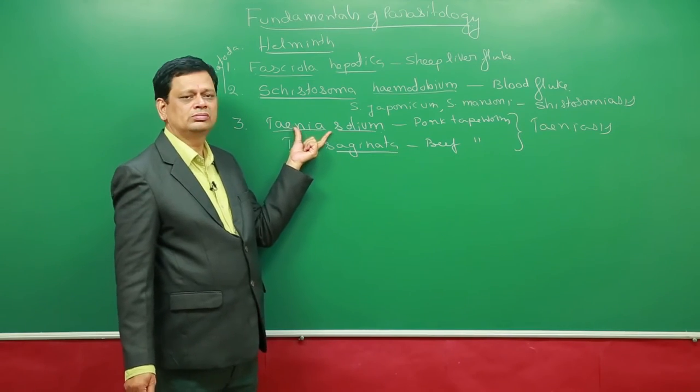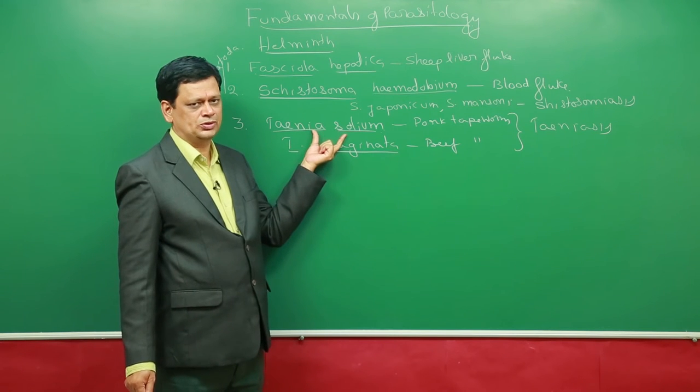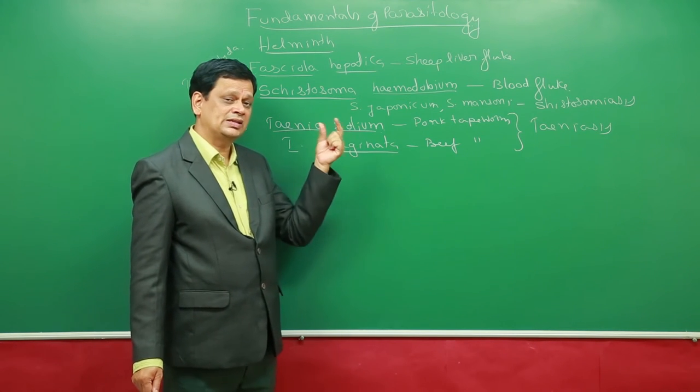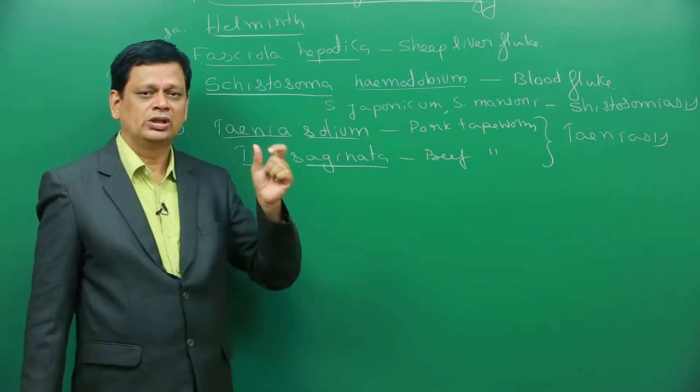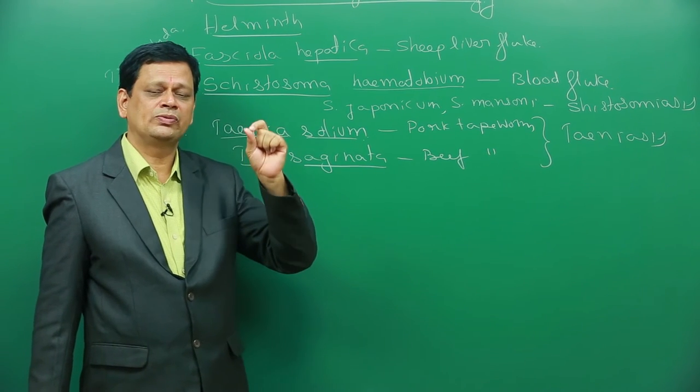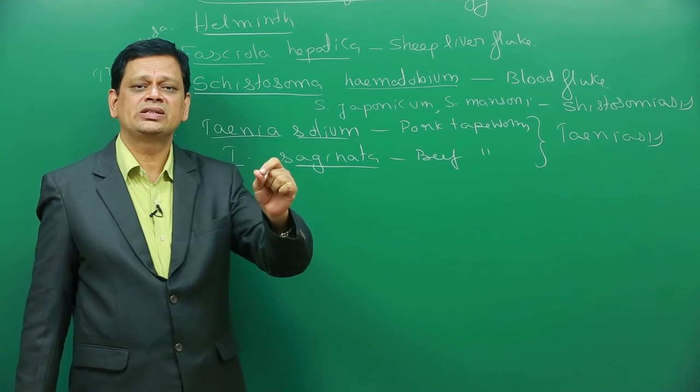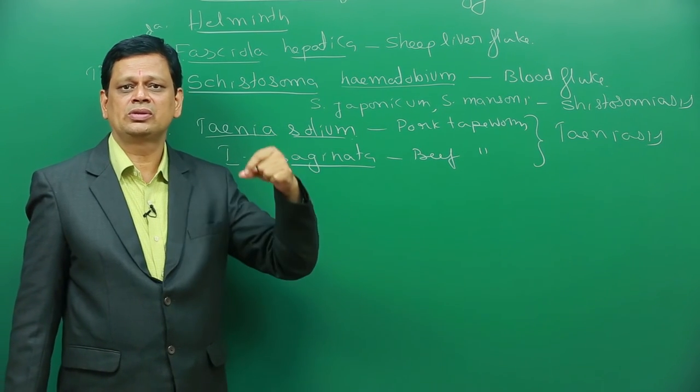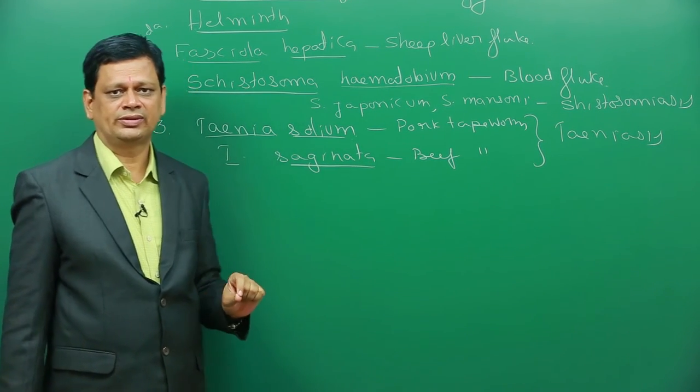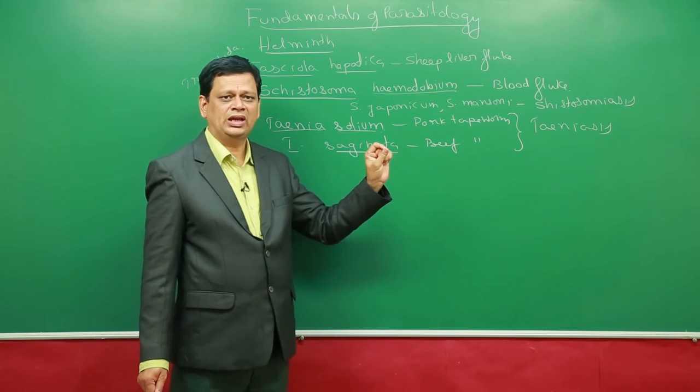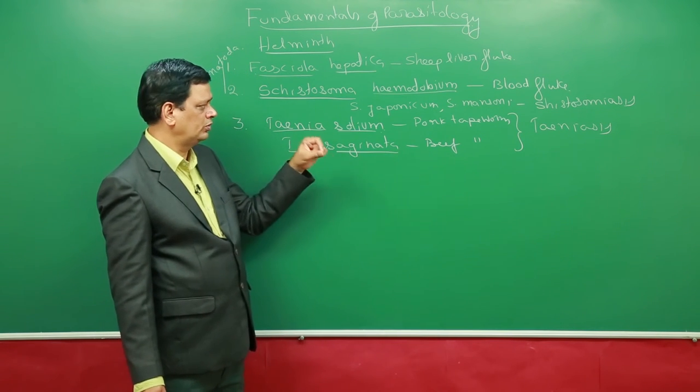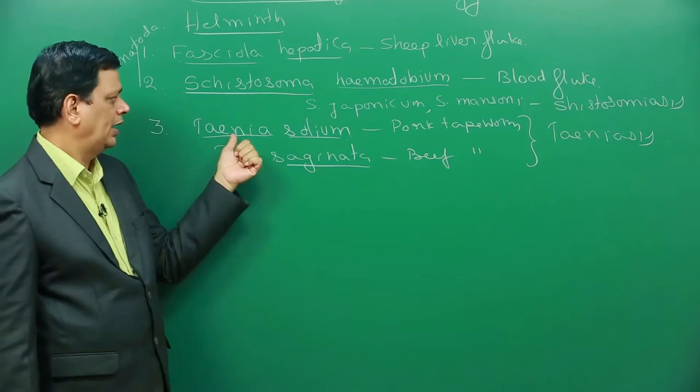In Taenia solium, human being is a primary host. In human beings, it lives in small intestine. So small intestine is a place where it is getting ready-made digested food. So it is absorbing through general body surface. It is living in small intestine, absorbing food through general body surface.